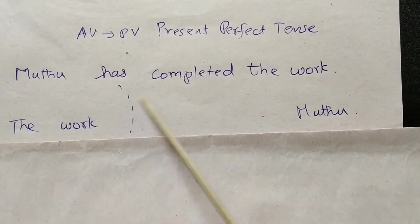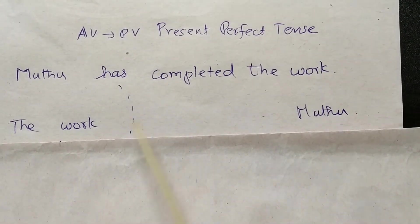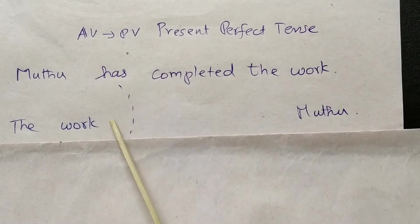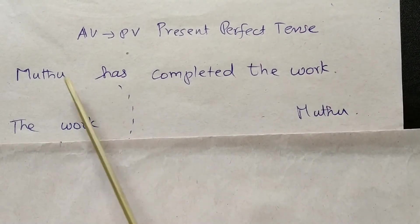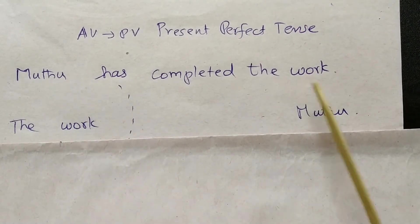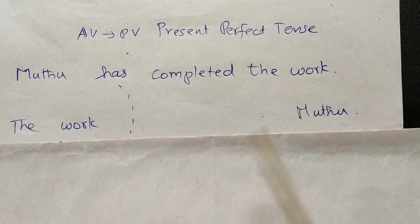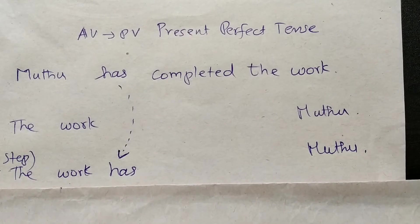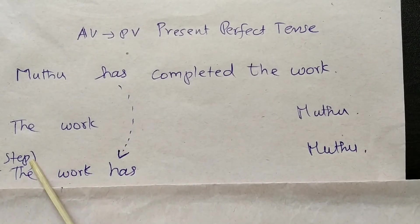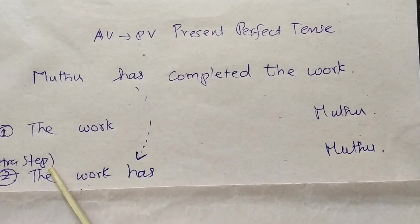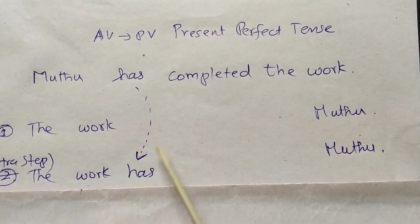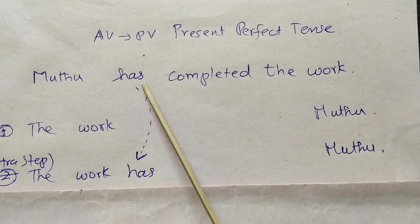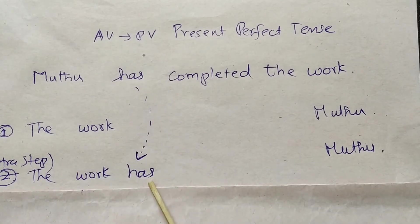The first step is to identify and swap the subject and object. Take the object and make it the new subject. This extra step is to protect the passive structure.